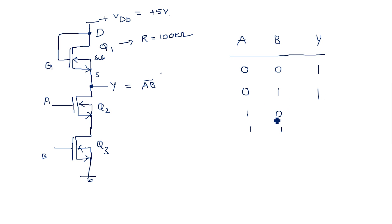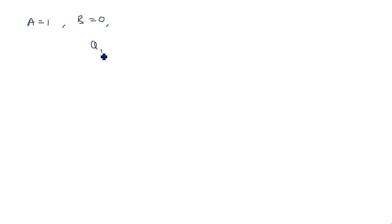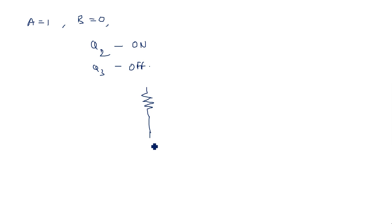Coming to the third case: A equals 1 and B equals 0. Q2 is ON because A equals 1, but Q3 is OFF because B equals 0. This is the same situation but with the transistors altered — the first transistor is ON but the second transistor is OFF. There is no change in the output: Y is equal to plus 5 volts, logic 1.